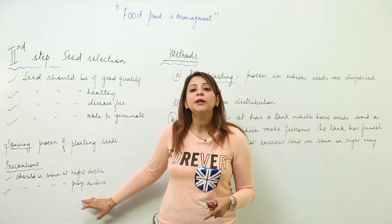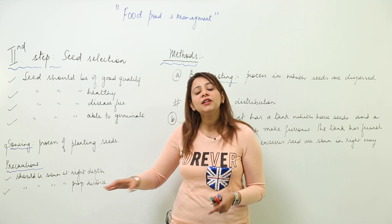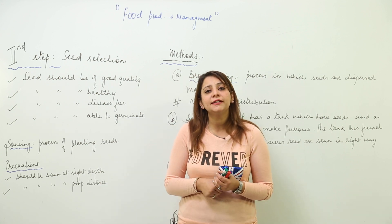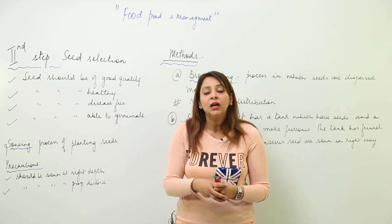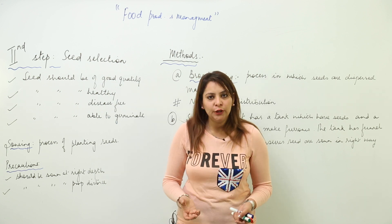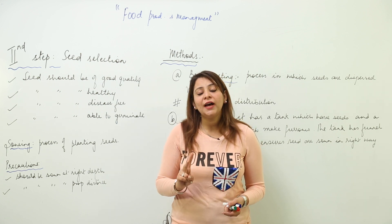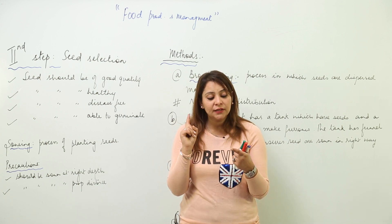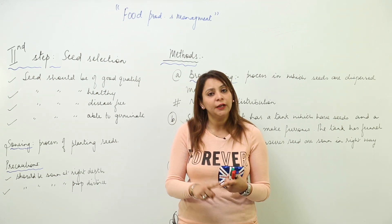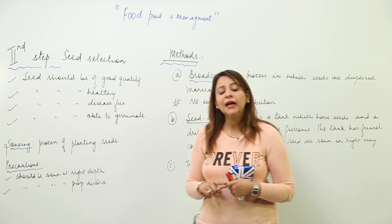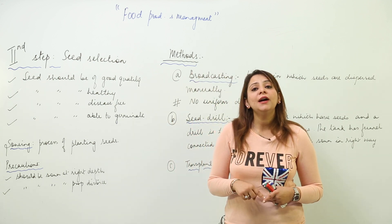Seeds must be sown neither too shallow nor too deep — they should be at a proper depth. Second, they should be sown at a proper distance, so they won't intermingle with each other and it will not lead to overcrowding. These are the two main factors a farmer needs to focus on: proper depth and proper distance.